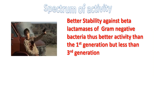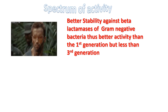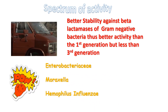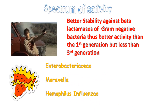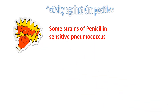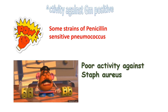Second generation cephalosporins have better stability against beta-lactamases of gram-negative bacteria compared to first generation. They have enhanced activity against many Enterobacteriaceae, Haemophilus influenzae, and Moraxella catarrhalis, but less gram-negative activity than third generation cephalosporins. Second generation cephalosporins retain some activity against gram-positive organisms including some strains of penicillin-sensitive pneumococcus, but have less activity against Staphylococcus aureus compared to their first generation counterparts.